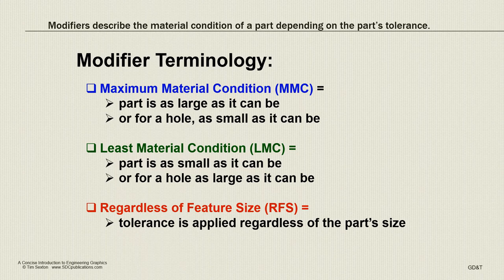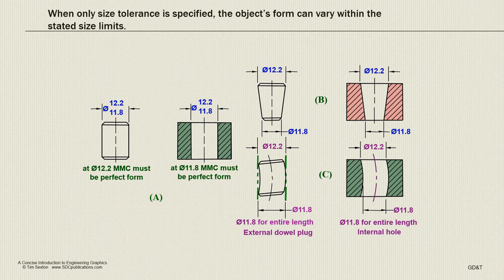The least material condition says apply this geometric tolerance when the part is as small as it can be or the hole is as large as it can be. And then regardless of feature size, RFS, says apply the tolerance no matter what the size of the part.